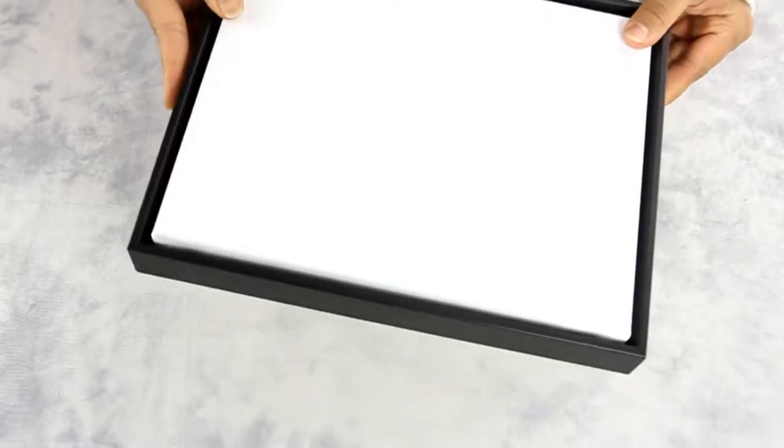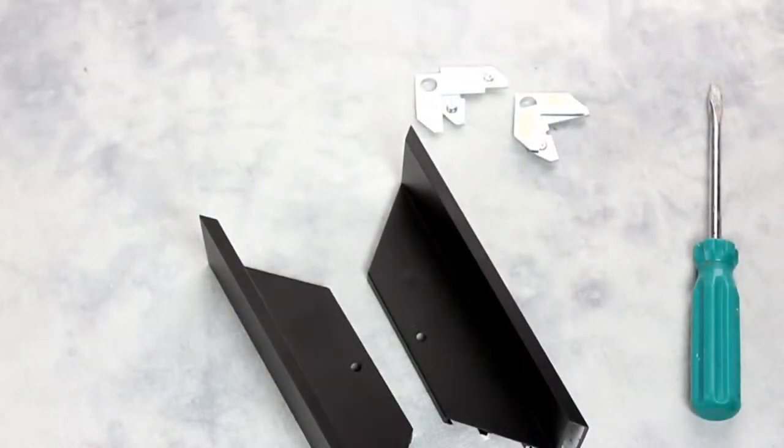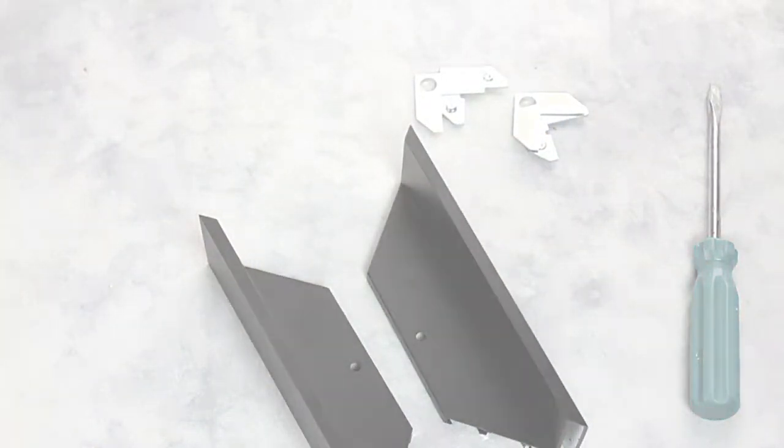Floater frames are used to frame gallery wrapped canvases or wood panels. To save the cost of shipping, you can simply assemble metal picture frames.